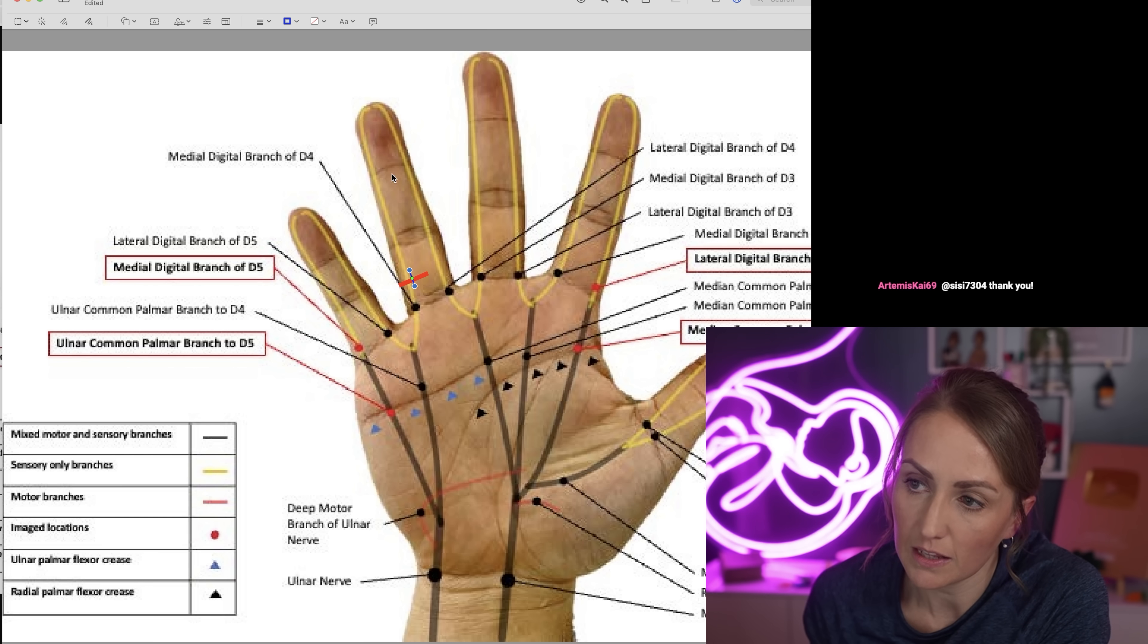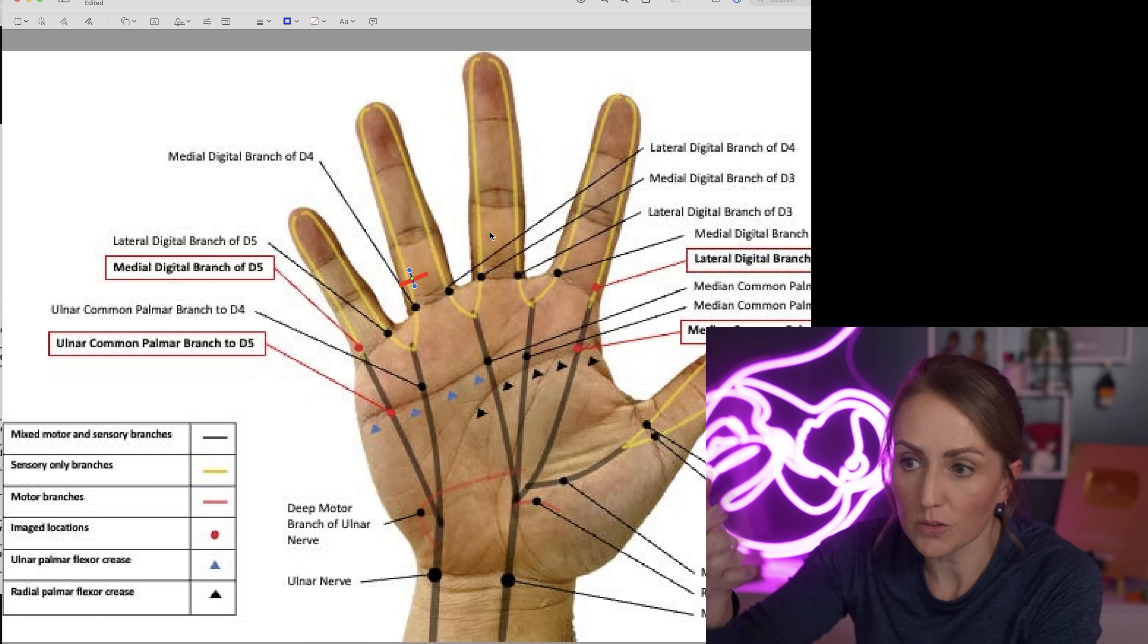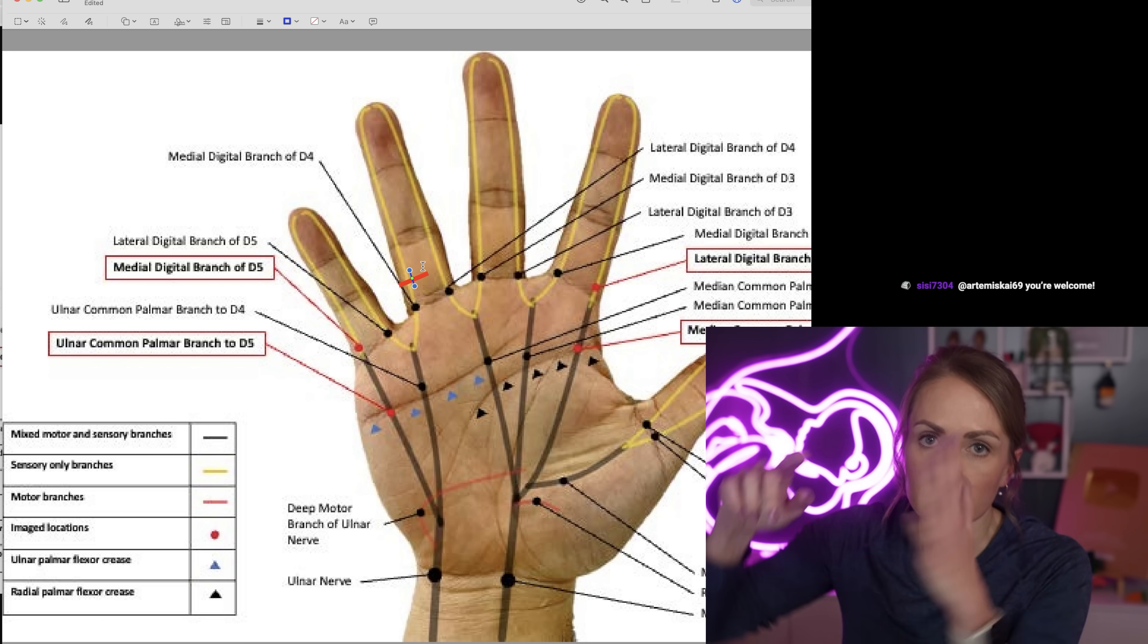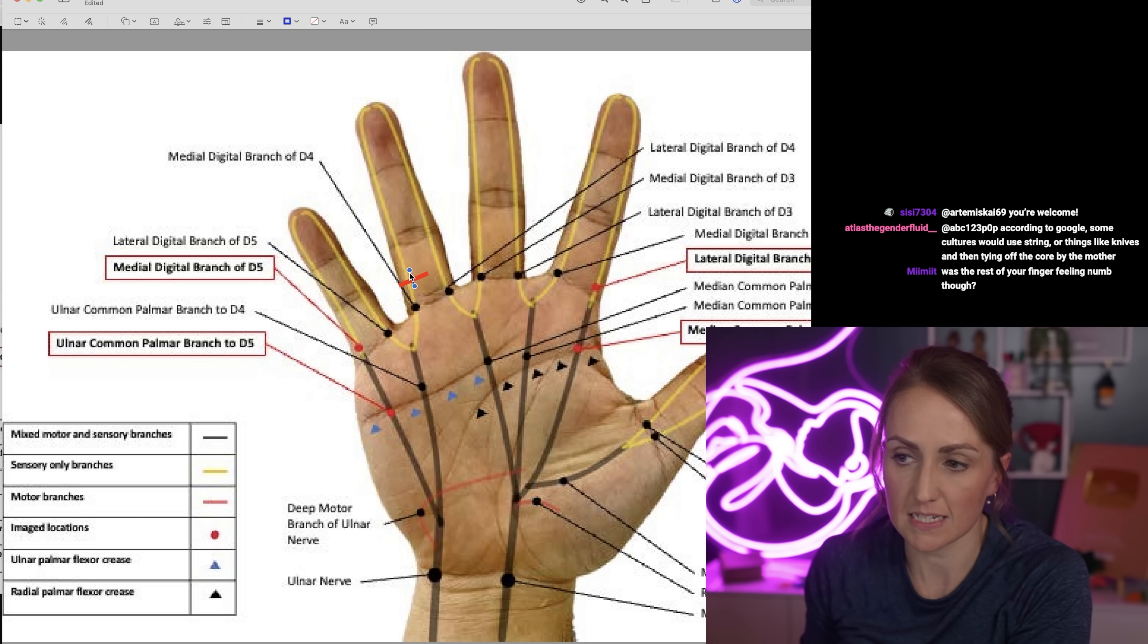The reason I couldn't feel the one on this side is because that nerve had been severed. So I could feel anything this way from the nerve, but everything this way from the nerve would try to be transmitted and the nerve was like, oh I just hit a roadblock, I can't send this feeling anywhere, you can't feel that. And then I knew that something was wrong.